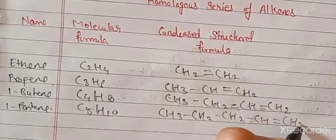1-butene: propane means three carbons; in between the second and third carbon there is a double bond. For 1-butene, recall meth, eth, prop, but. Here the structure is CH3-CH2-CH=CH2, with a double bond on the first carbon atom. That is why it is called 1-butene.